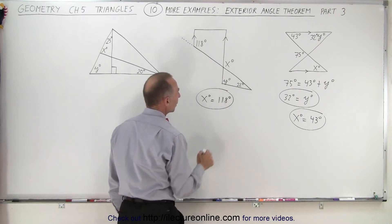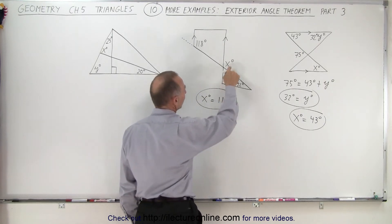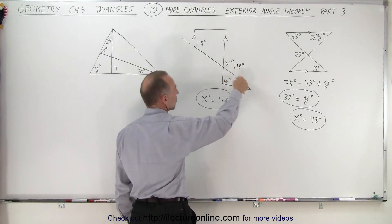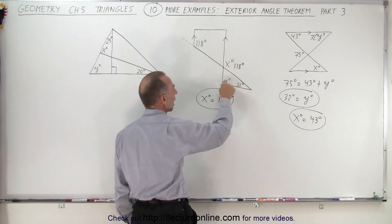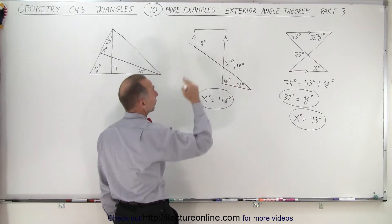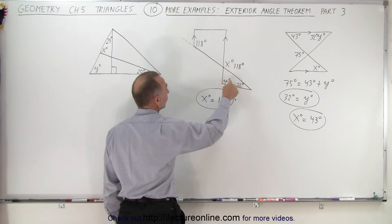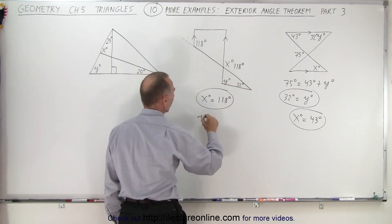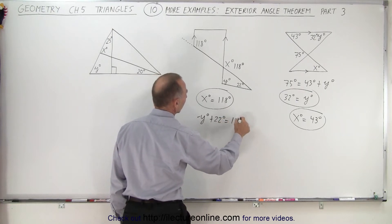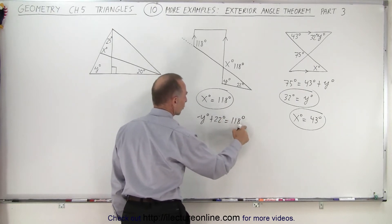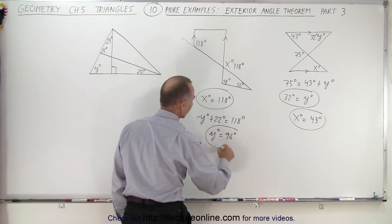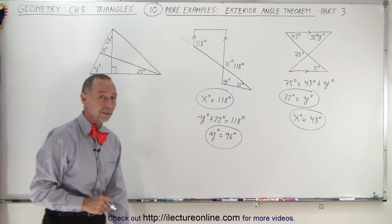Now let's find y. Since x is equal to 118 degrees, notice that this is the exterior angle to this triangle, and we have the two opposite interior angles. From the exterior angle theorem, y degrees plus 22 degrees must equal 118 degrees. Subtracting 22 from both sides, we get y equals 96 degrees. That's our second answer for the second problem.